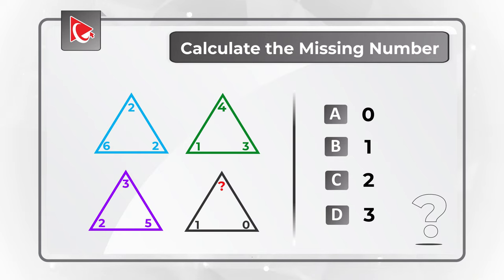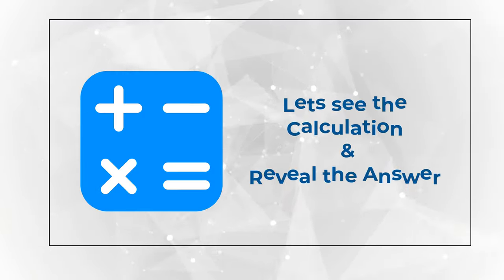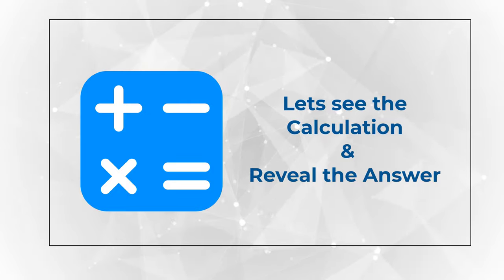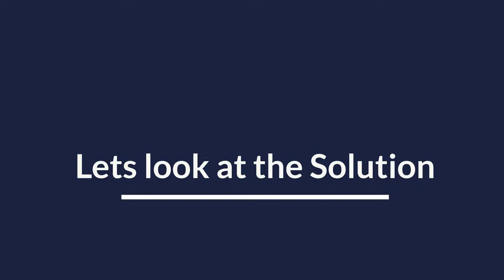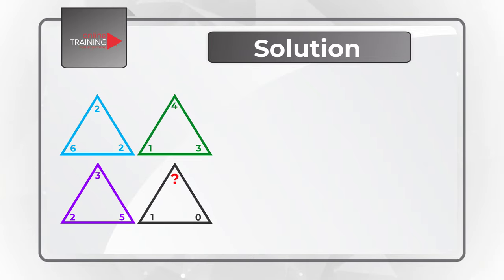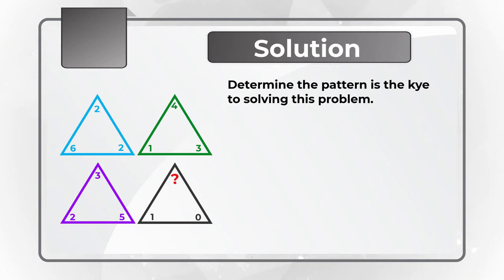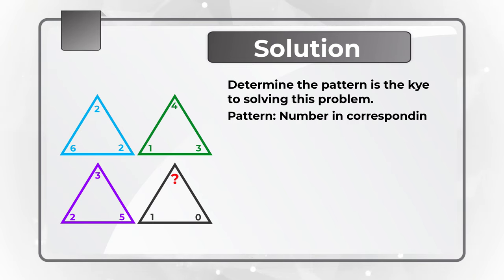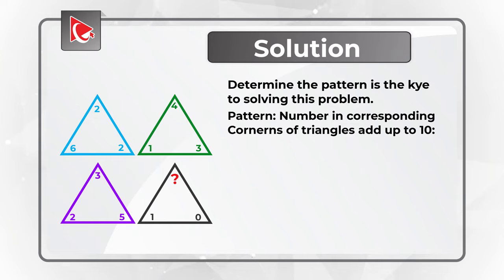Do you see the answer? There is a true calculation behind determining what the number is. The trick about this problem is that the number can be calculated, and the key is to determine the pattern. The pattern here is that the numbers in the corresponding corners of the triangles all add up to 10.